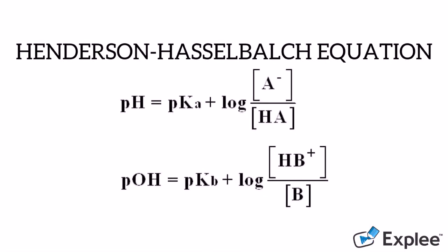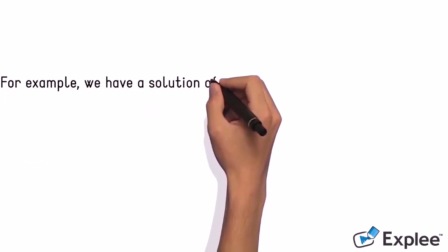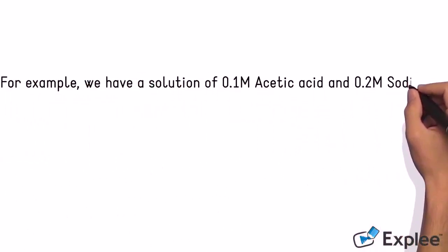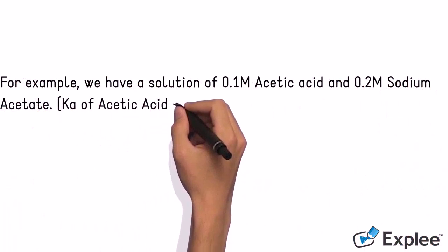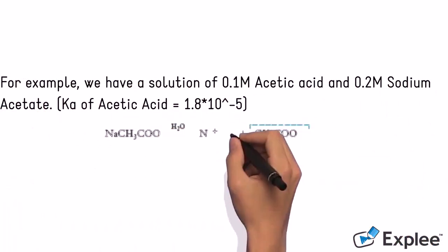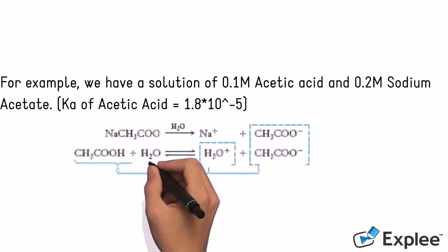Now let's see how the Henderson-Hasselbalch equation works by trying to solve this problem. For example, we have a solution of 0.1 M acetic acid and 0.2 M sodium acetate. Below is the formula for both dissociation into their ions.